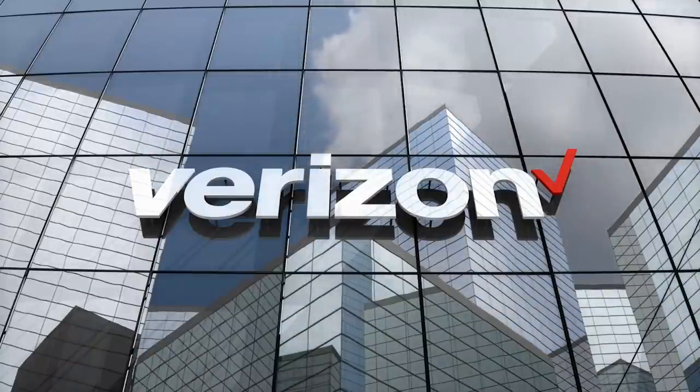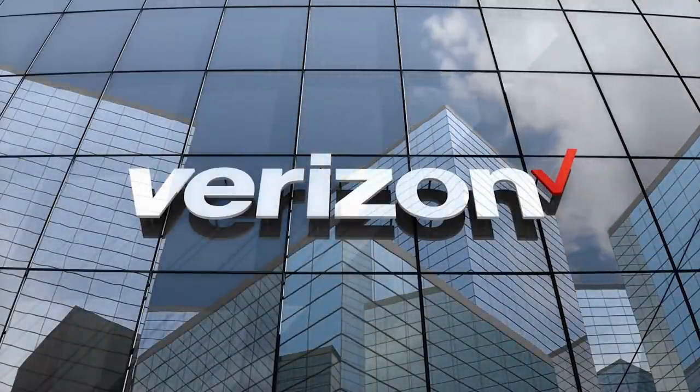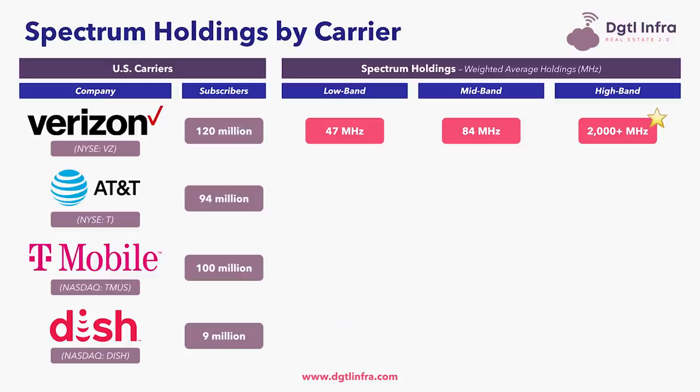Verizon is the largest carrier in the United States with 120 million subscribers. They are third out of the four carriers in low-band holdings, fourth in mid-band holdings, and number one in high-band holdings. In low-band, Verizon holds 47 MHz of spectrum depth. In mid-band, Verizon holds 84 MHz. And in high-band, Verizon holds over 2,000 MHz of spectrum depth.